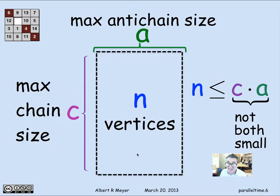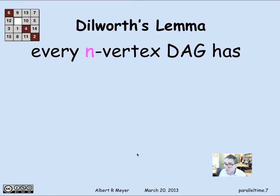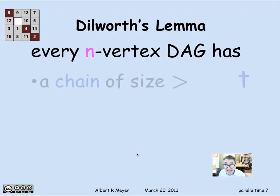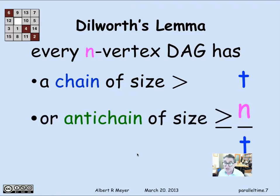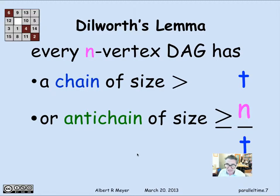This can be rephrased as Dilworth's lemma, a special case of the famous Dilworth's theorem. Dilworth's lemma states: if you have an n-vertex DAG, then for any number t, it either has a chain of size greater than t, or it has an anti-chain of size greater than or equal to n over t. The product of these two bounds is at least n, and the general case is t times n/t ≥ n, which holds for all t between 1 and n.